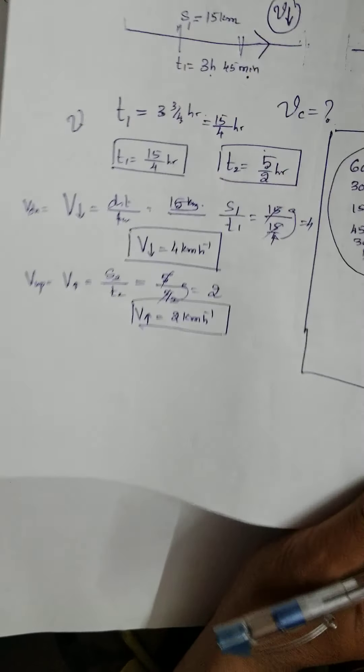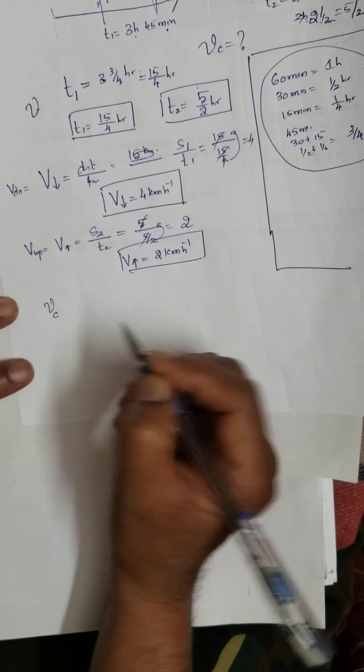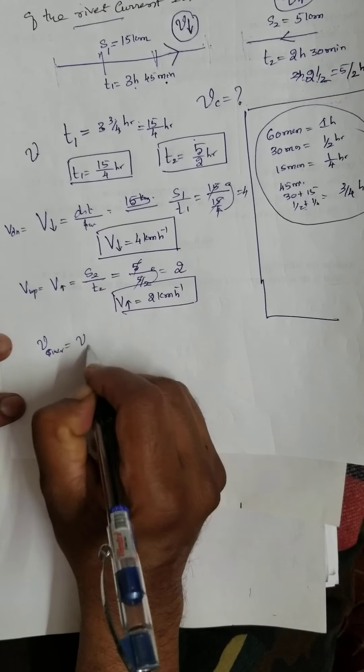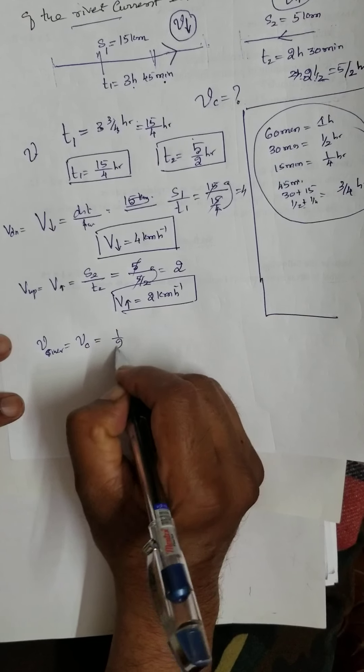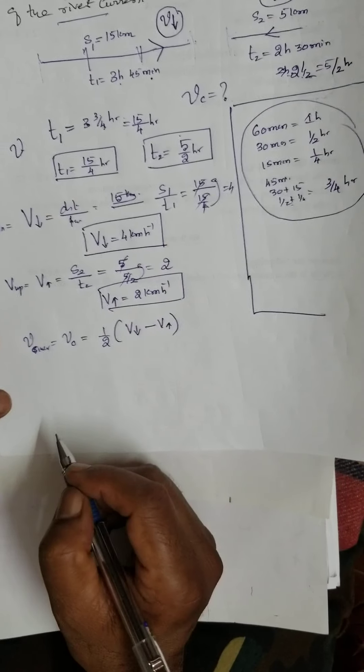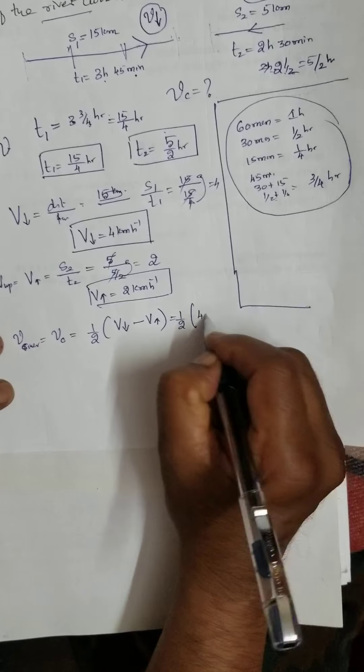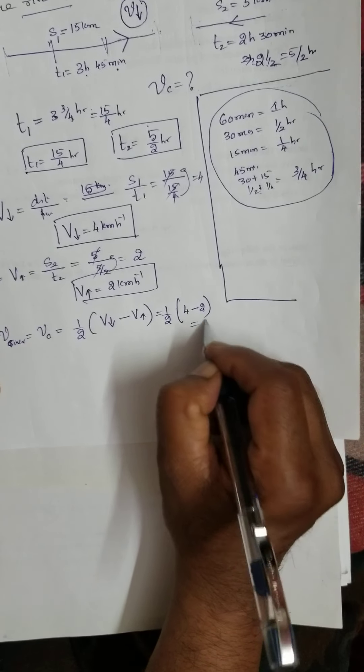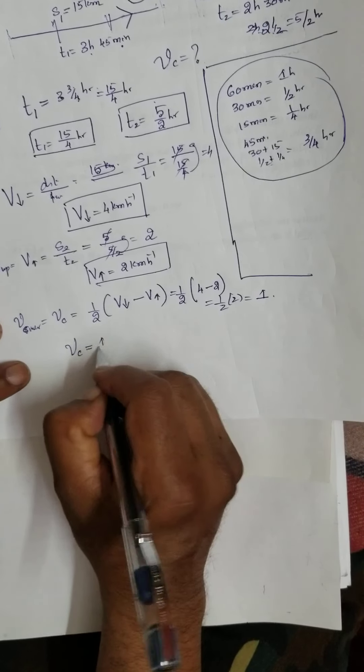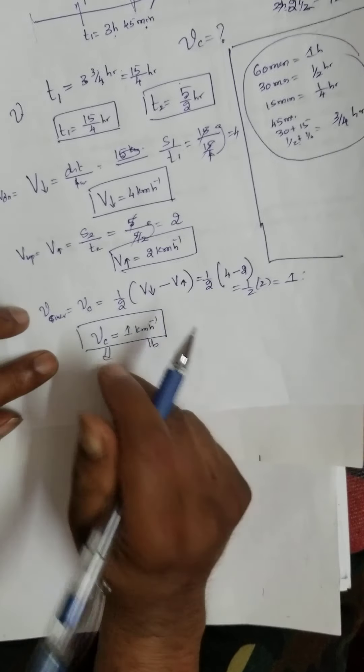Now, we have done this particular sum. What is velocity of the current? They are asking, find the velocity of river current. The velocity of the river or velocity of the river current is equal to half velocity of the downstream minus velocity of the upstream. Is it not? That is how much of velocity of the downstream is 4. Up is 2. That means what? How much of velocity of the river is 1. Therefore, velocity of the current is equal to 1 kilometer per hour. This is velocity of the river.